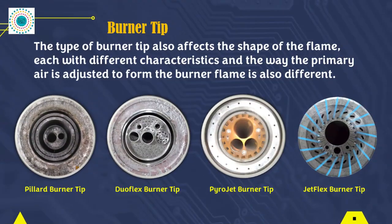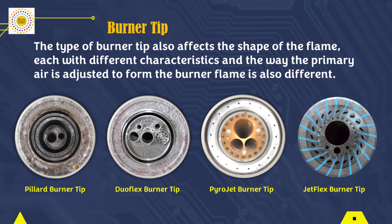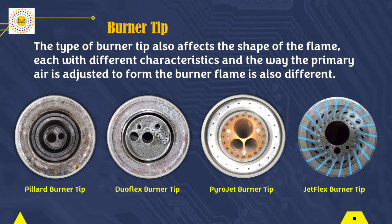The type of burner tip also affects the shape of the flame, each with different characteristics, and the way the primary air is adjusted to shape the burner flame is also different. If the axial and radial primary air settings are not properly adjusted in accordance with the operating standards of each type of burner, it will result in the flame shape not being as desired.